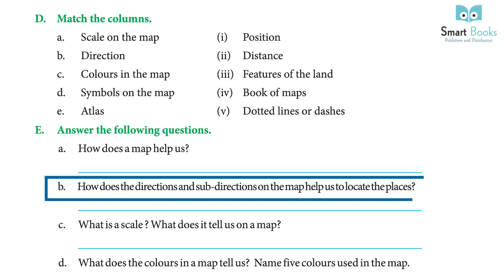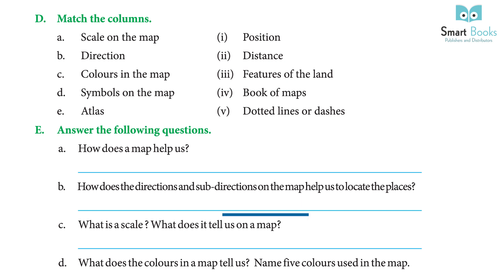Question: How do directions and sub-directions on the map help us to locate places? Answer: The directions on the map help to find the position of a place.